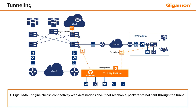A GigaSmart tunnel destination can be a single tunnel destination or a tunnel load balanced endpoint. If destinations are not reachable, then packets are stopped from being sent. GigaView FM reports any loss of connectivity or change in the tunnel destination status.